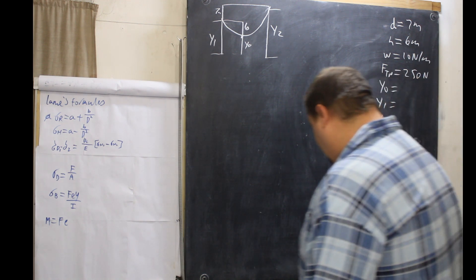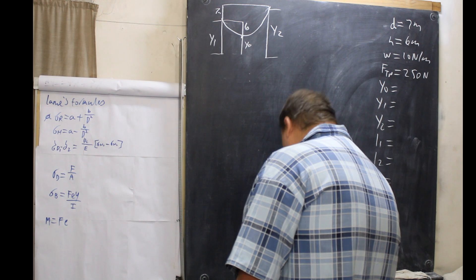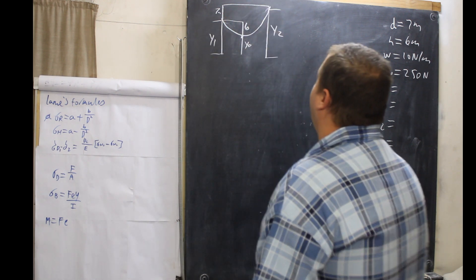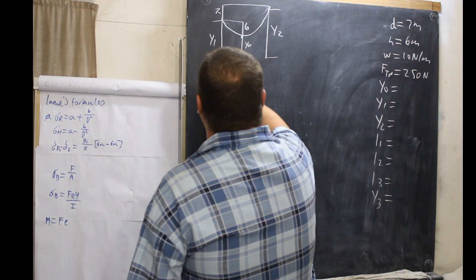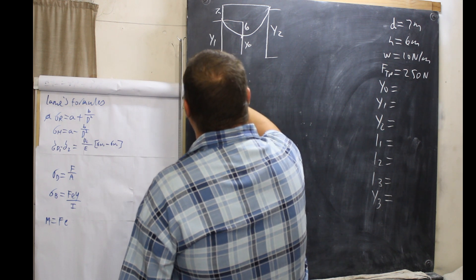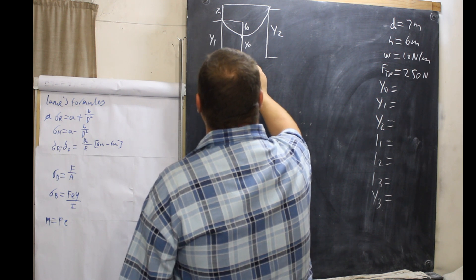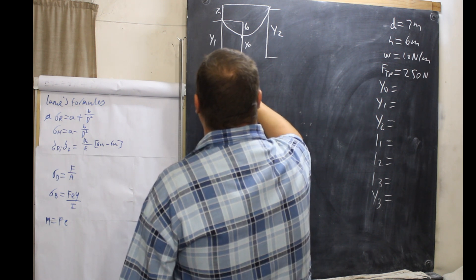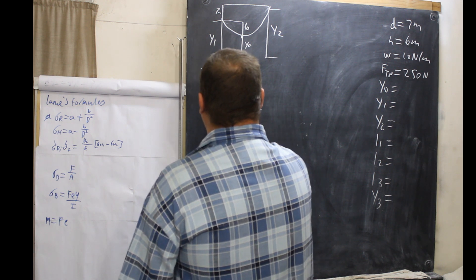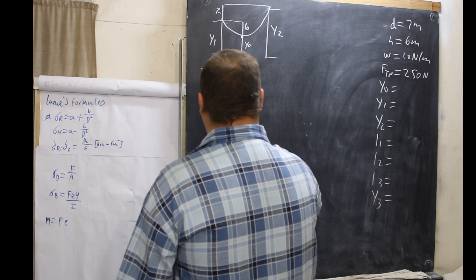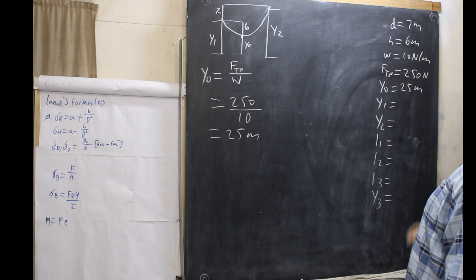Our first question asks for the tension at the two supports — the tension at each support. To find this, we first need Y0. Y0 is calculated as F at the turning point divided by weight: 250 over 10 equals 25 meters. So Y0 is 25 meters.